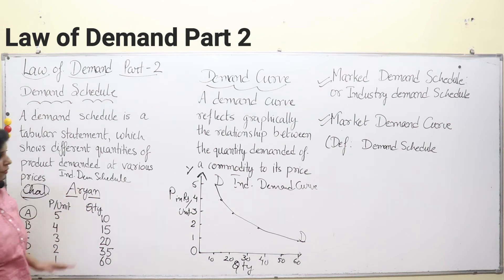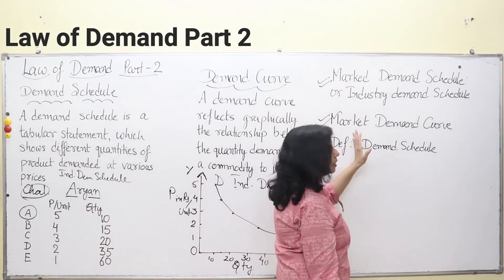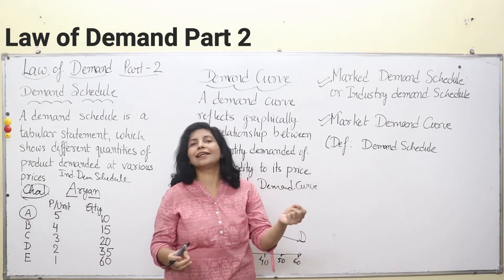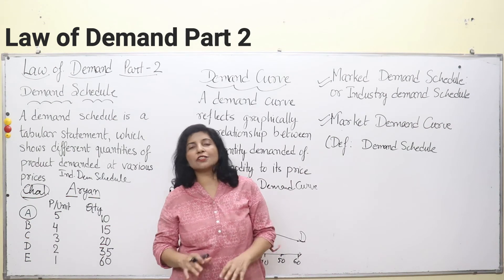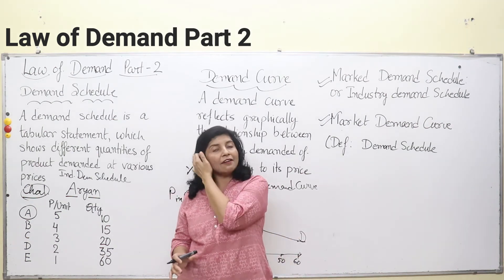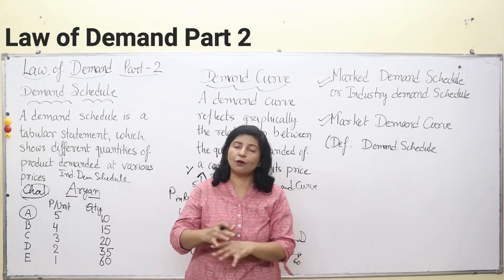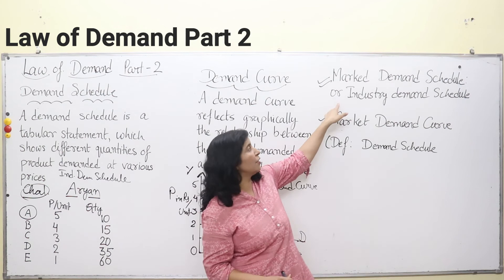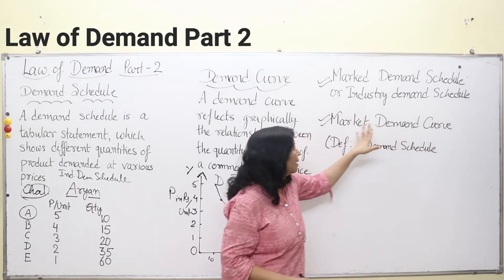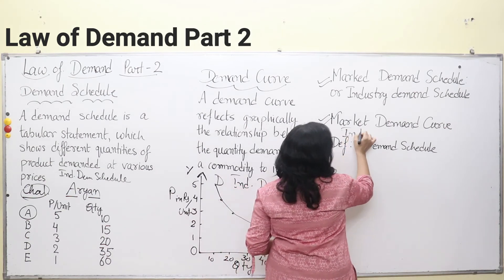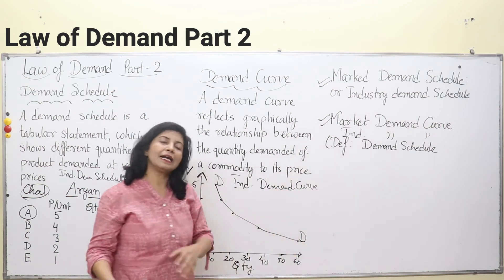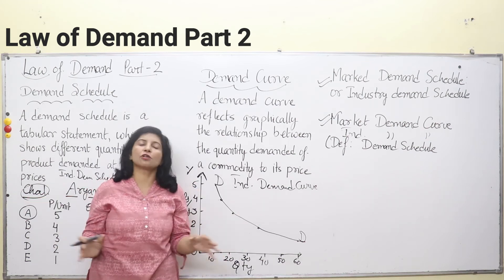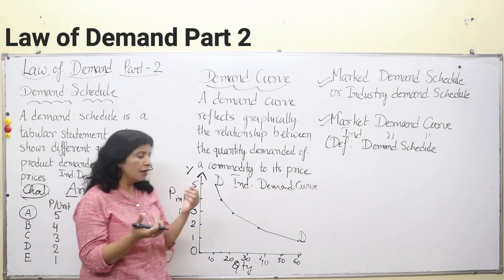Now we come to the market demand schedule and market demand curve. Producers manufacture commodities not for a single individual but for the whole market. As managers, we need to see total sales in the whole market. The market demand schedule is also known as the industry demand schedule, and the market demand curve is also known as the industry demand curve. To draw it, you need the consumption schedules of many individuals or households.